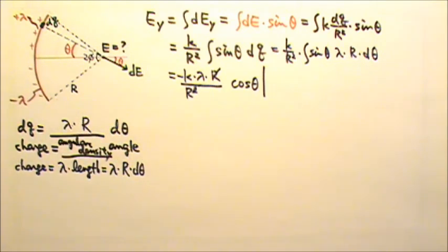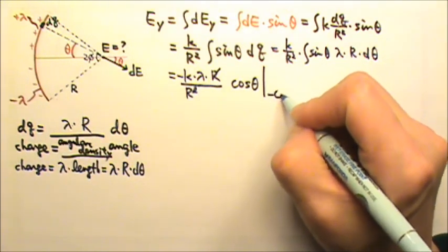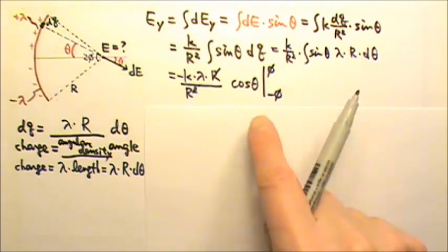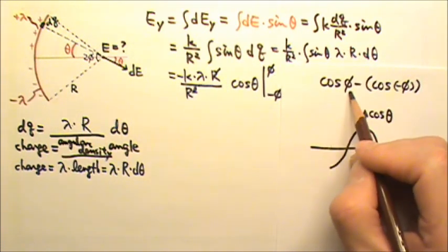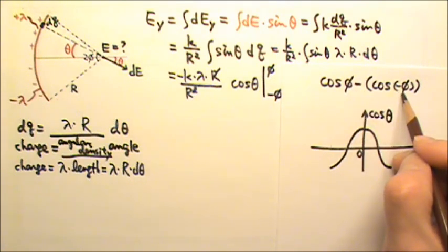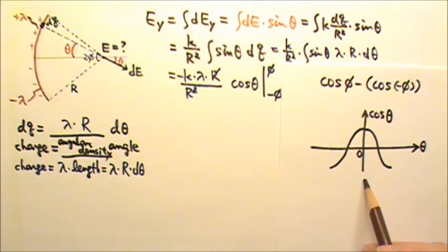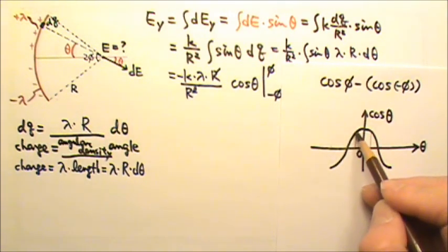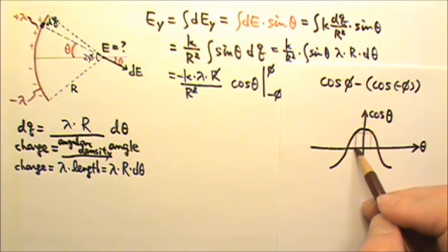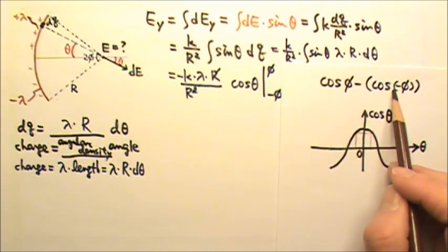Now in this particular case, if we write negative φ to φ, we're going to get 0. This part is going to be cos φ minus cos negative φ. A cosine function looks like this, which means the cos φ and the cos negative φ would be exactly the same. So these two are the same, which means we'll end up having 0.